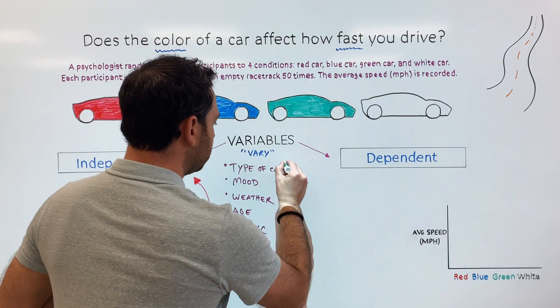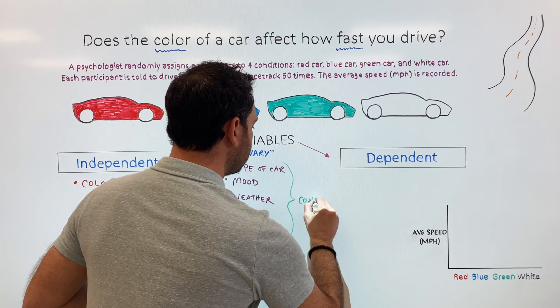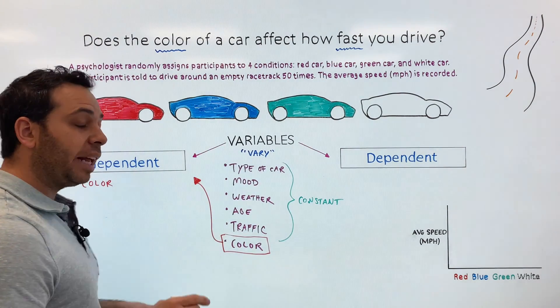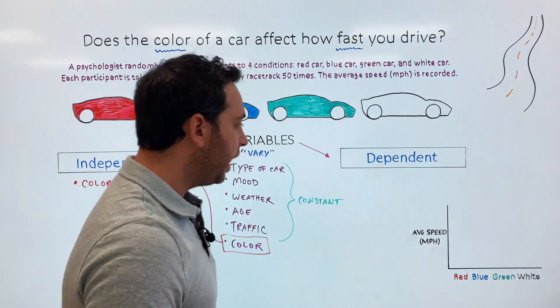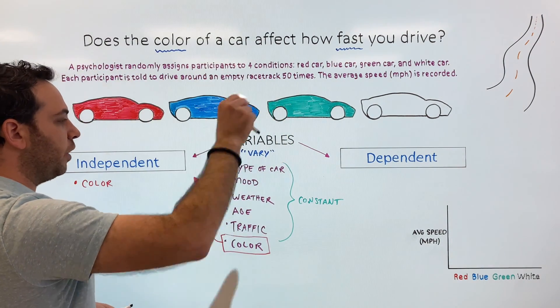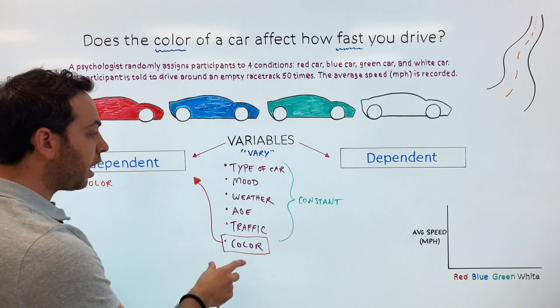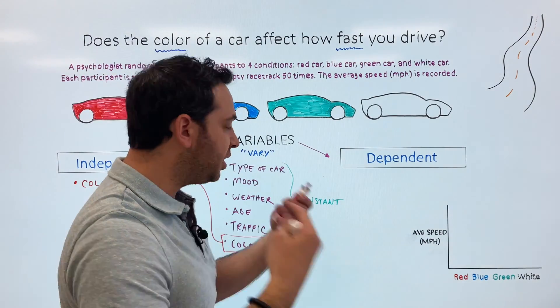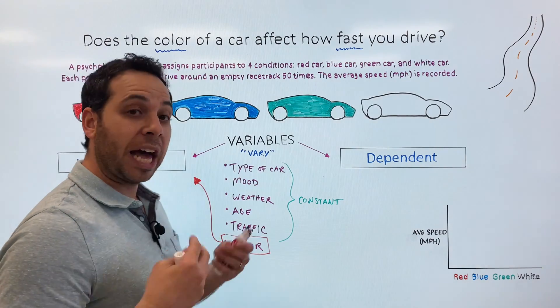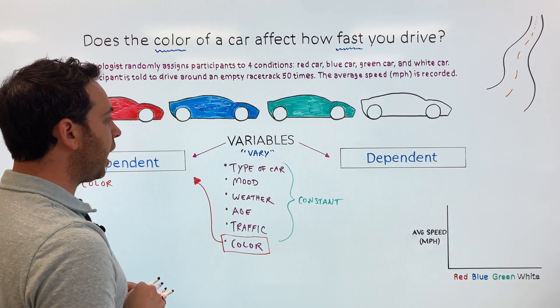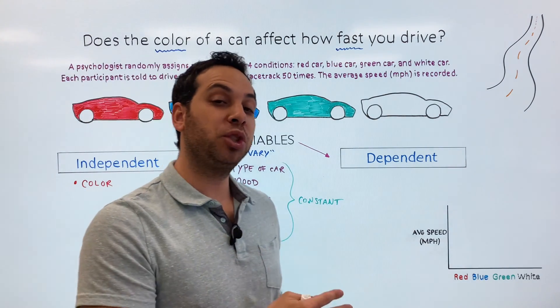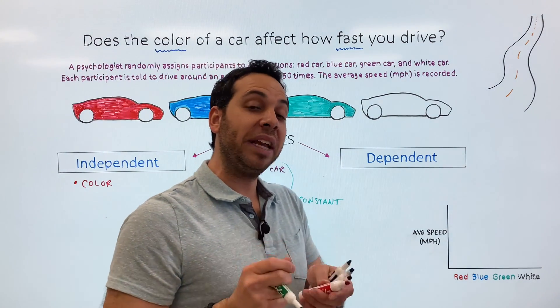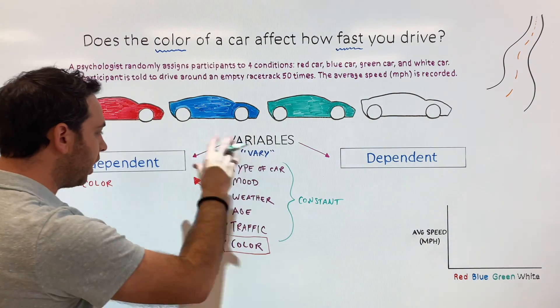Well, these variables have to remain constant. In other words, the only variable that can change in the whole study is the color. And everything else must remain unchanged. In other words, we have four conditions: red car, blue car, green car, white car. Every one of these variables, other than color, has to be exactly the same in every condition. In every condition, the weather has to be the same. Let's say it has to be sunny the whole time. The traffic - there's got to be no traffic, which is why I set an empty racetrack. The type of car - I can't have one person driving a minivan and another person driving a sports car. So the car has to be the same in all those. Everything has to remain the same and unchanged. So there we go. That is our independent variable.